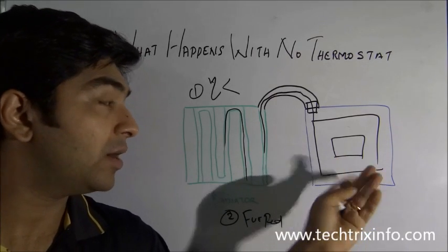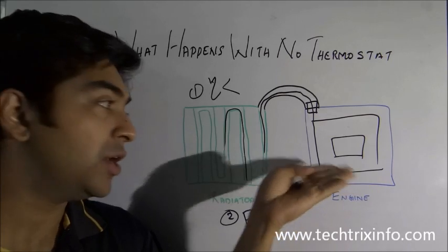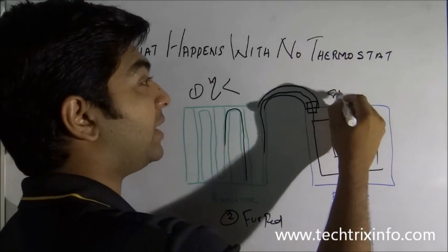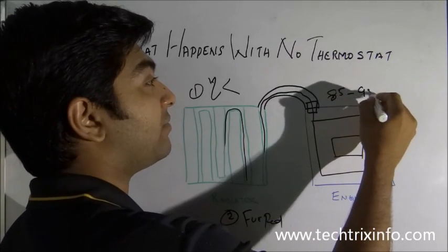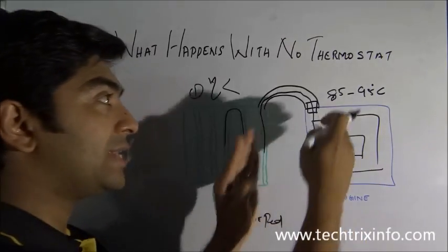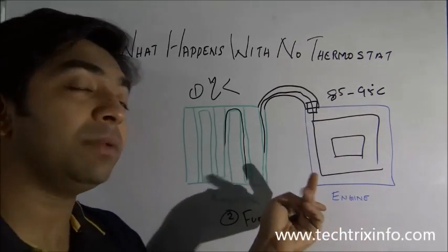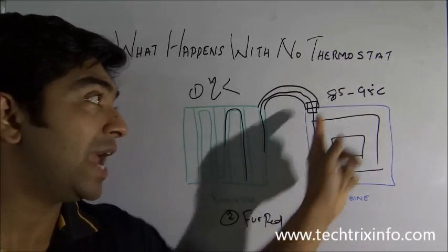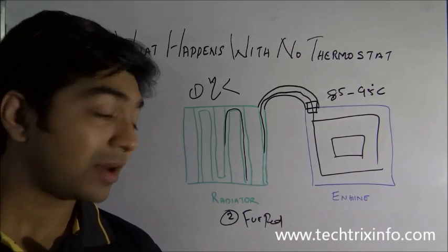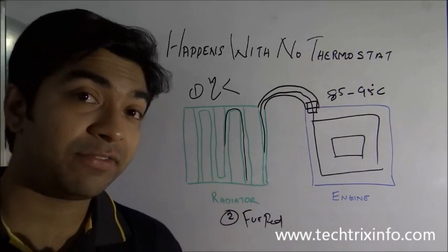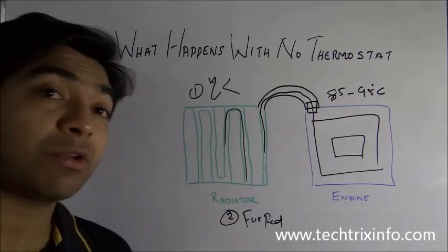So the engine temperature will rise to about 85 to 95 degrees Celsius. That's the range of the optimum temperature of an engine. At this range of temperature, an engine will work with the highest efficiency and with the highest fuel economy.